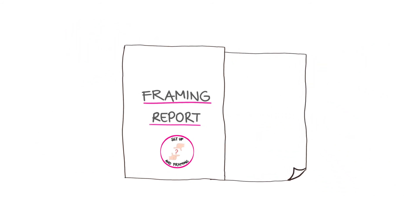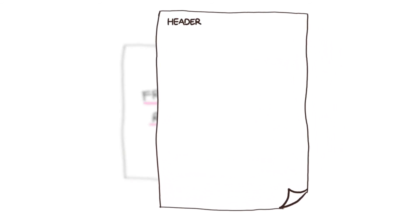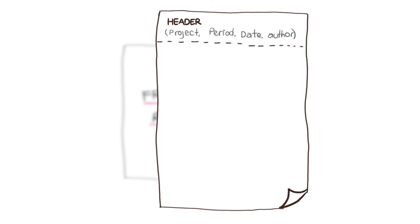The report can have the following structure. Header: what learning process is this? If necessary, include a footnote indicating the project that this learning process is part of. Period during which the framing was carried out. Clarify that this is the learning process framing report, including the date and author of the framing report.